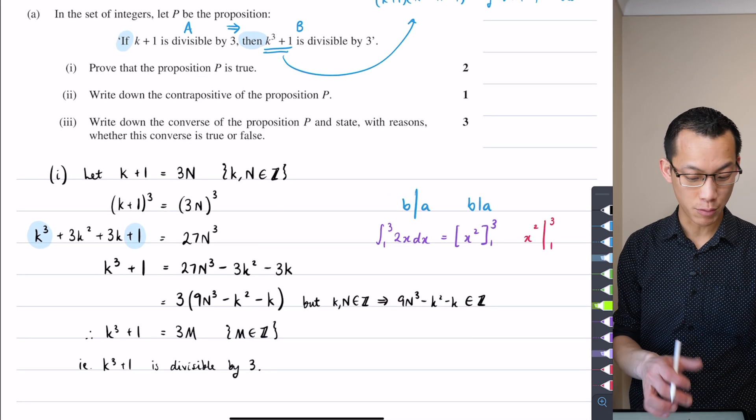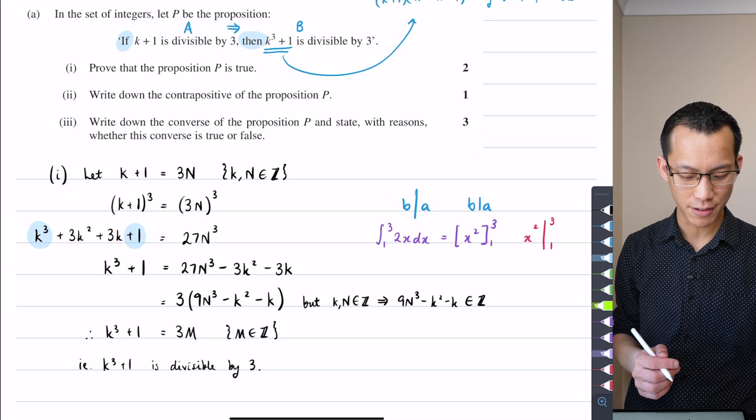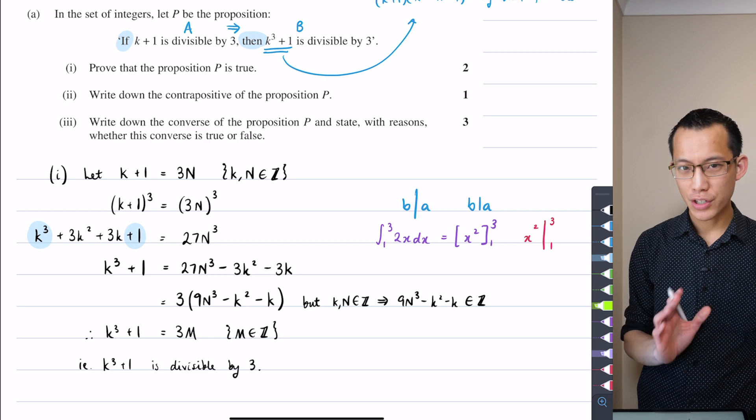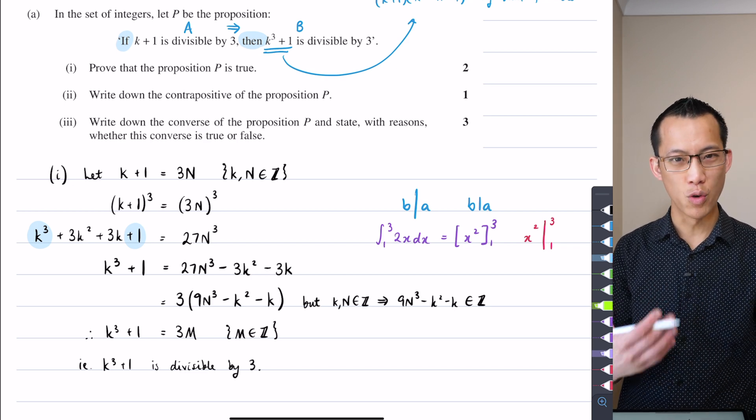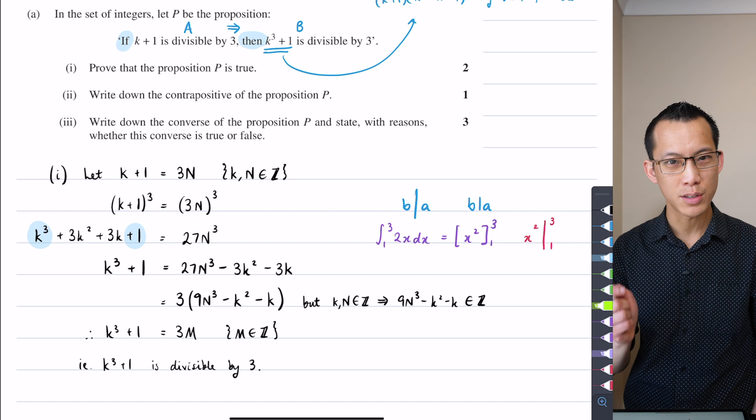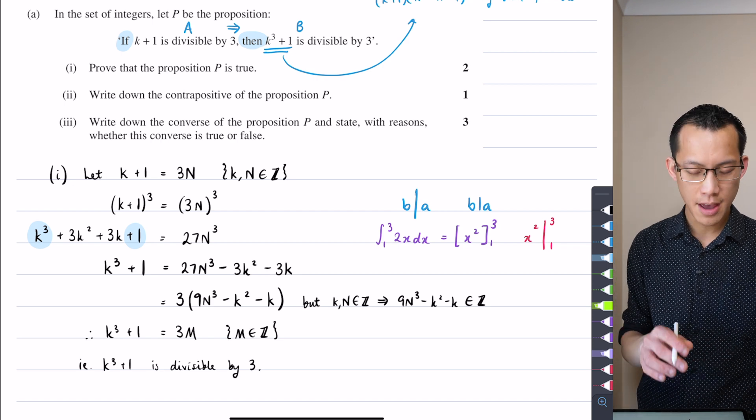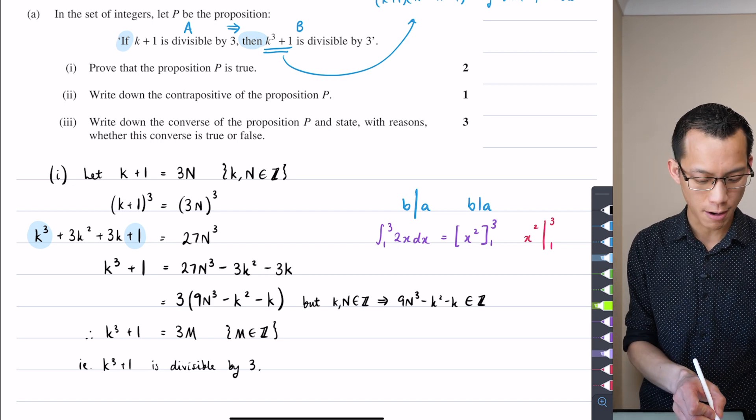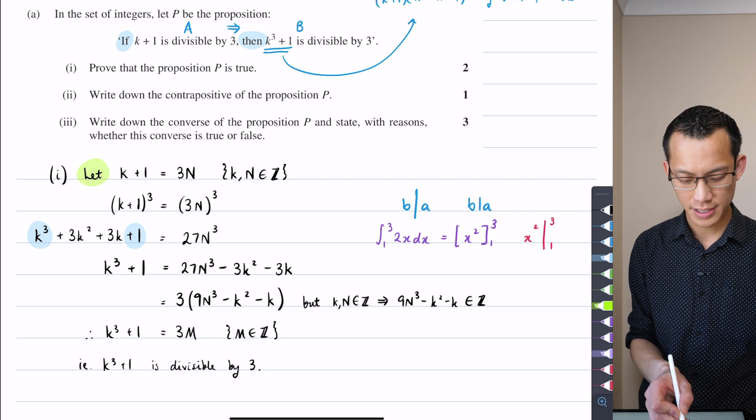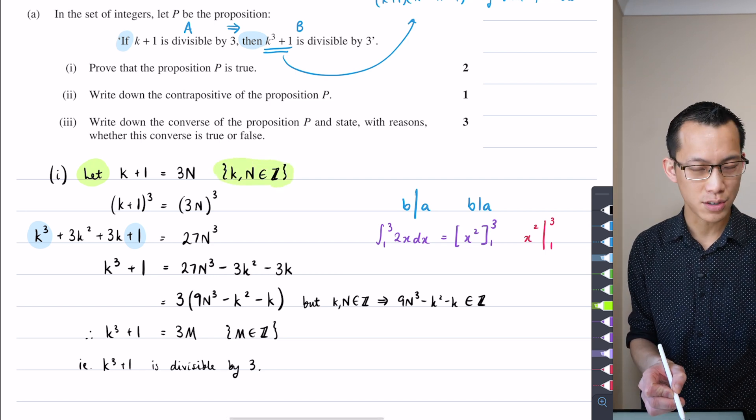Just as we move on to part two, let me highlight how much additional working and symbolic language is used around this that actually makes the proof clear. Even things like 'let', talking about what conditions your numbers meet, explanations about why you can say these things are integers.